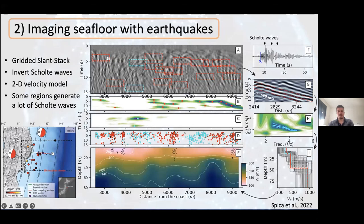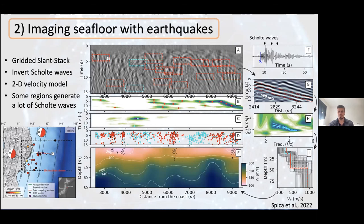We notice some regions where for essentially every single earthquake we detect clear Scholte waves — for example in certain zones along the cable. We think those regions might be fault zones or at least regions where scattering is very strong. However, in other regions it is pretty random where Scholte waves can be clearly observed.